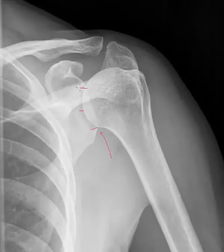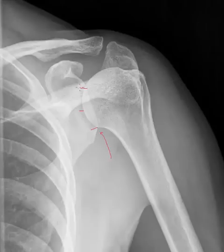The glenohumeral joint is not a common joint to have degenerative joint space narrowing, simply because this is not a weight-bearing joint. However, the labrum — the cartilaginous structure that is essentially the articular surface of the glenoid — can undergo degeneration, and therefore the joint can narrow.